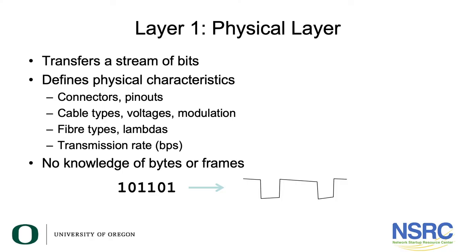So let's start with layer one. Layer one is the physical layer and its job is to transfer a stream of bits, a stream of ones and zeros, from one end of a link to the other. So for example it could be along a copper cable, it could be along a fibre optic, or it could even be radio waves across free space. Its job is to take ones and zeros and get them to the other end of some kind of physical medium.